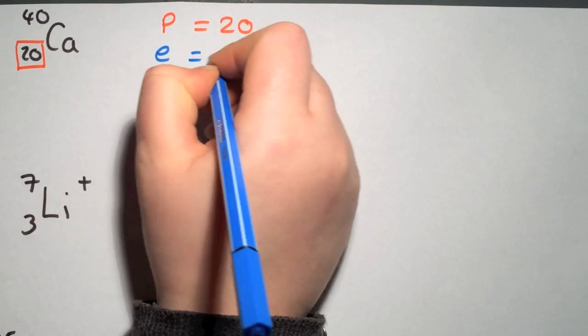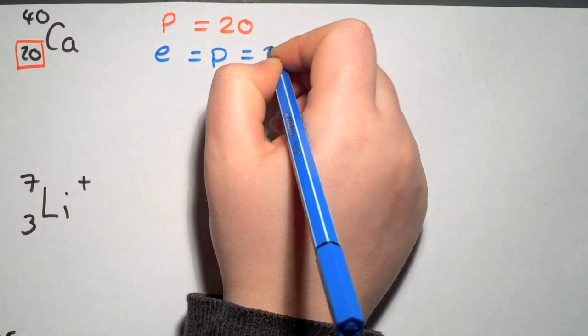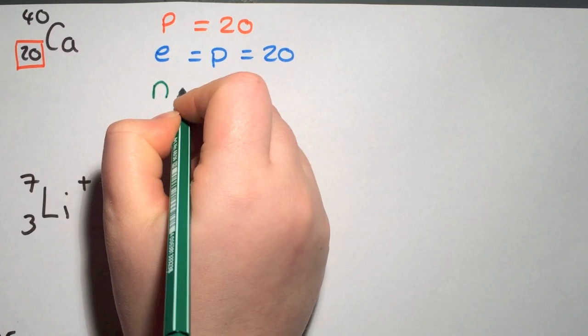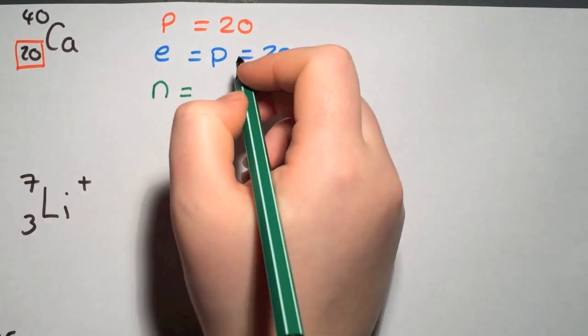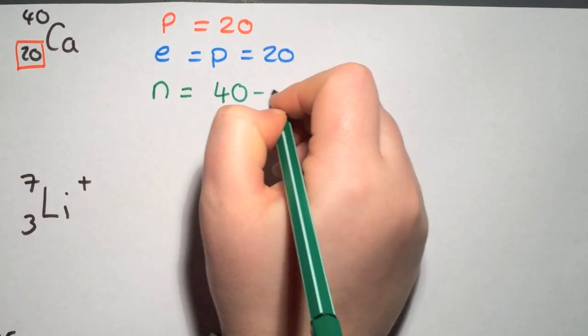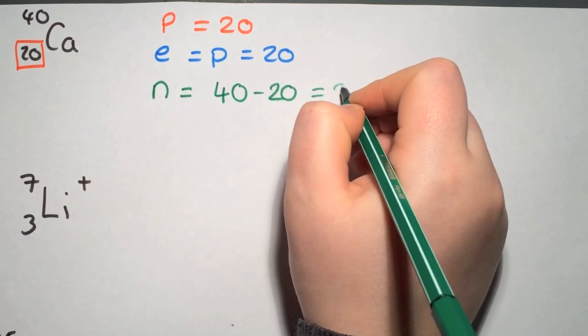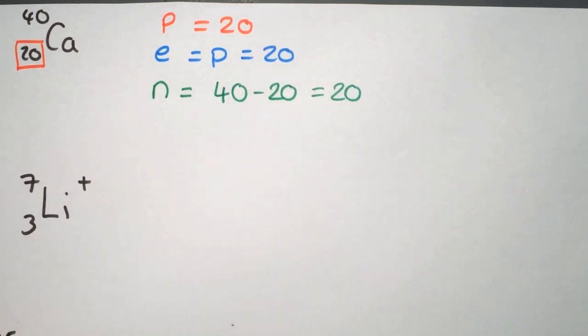Electrons, as it is neutral, electrons is equal to protons so it is also 20. And the neutrons is the mass number minus the atomic number. That will give us 20 neutrons also.